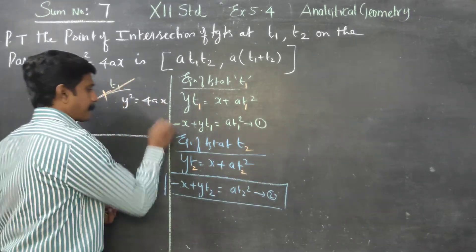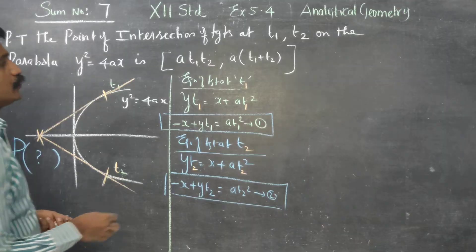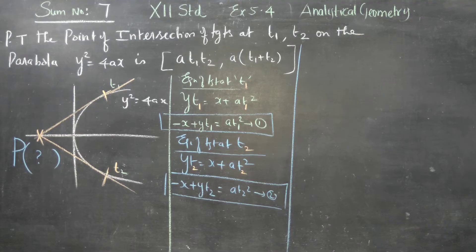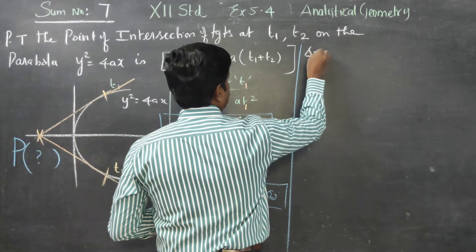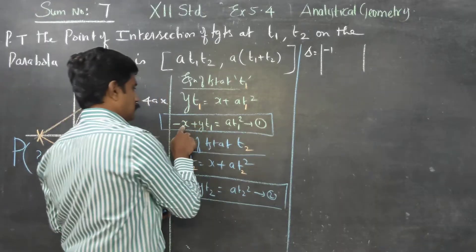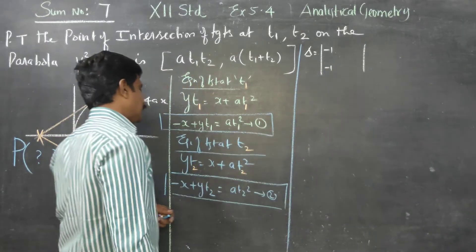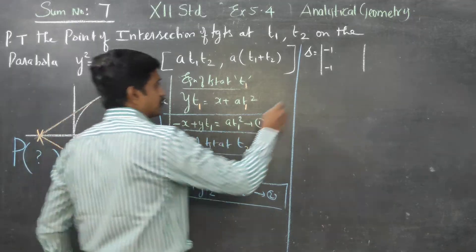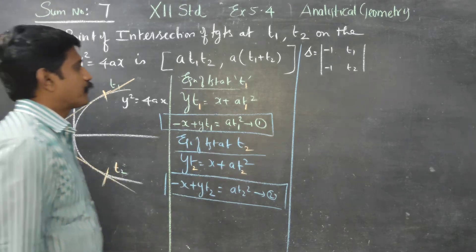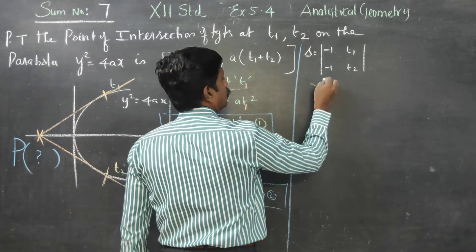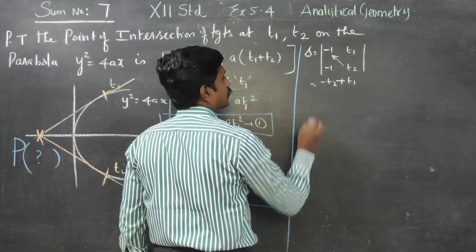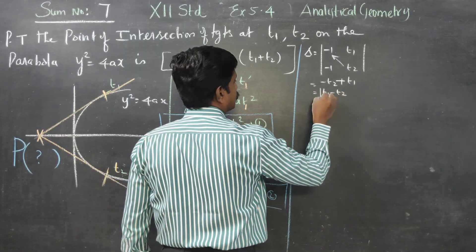Now we have to solve for x and y — x and y give the point of intersection. Using Cramer's rule: delta is formed from the coefficients of x and y. The x-coefficients are -1 and -1; the y-coefficients are T1 and T2. Cross multiplying gives -T2 minus (-T1), therefore delta = T1 - T2.